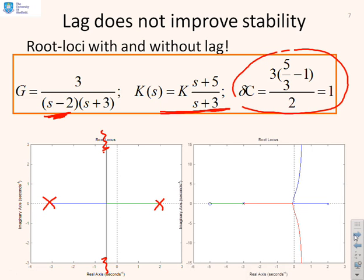And here you go. You'll see the new root loci. And now you're very, very restricted in what values of K will actually make you stable at all. And you are closed loop unstable for nearly all values of K. So in this case, this lag compensator is a total disaster.